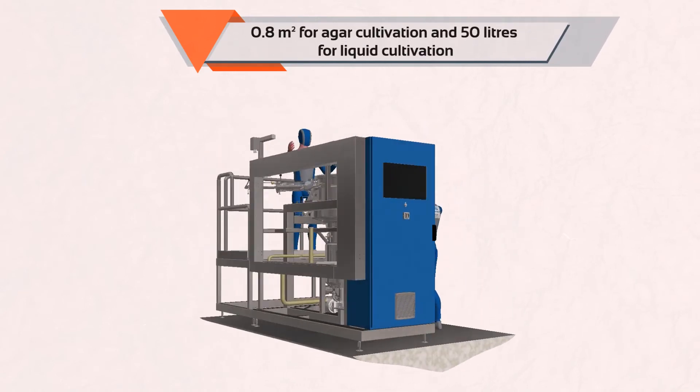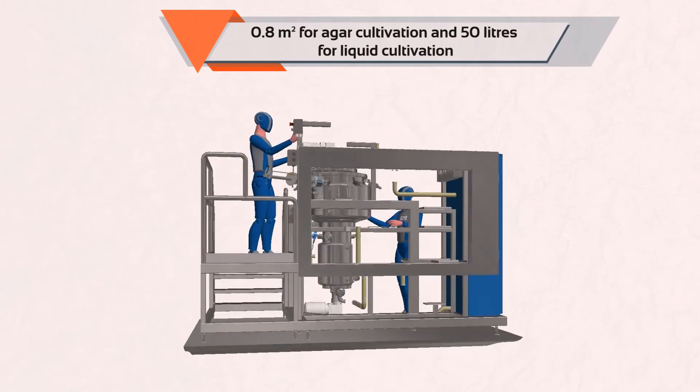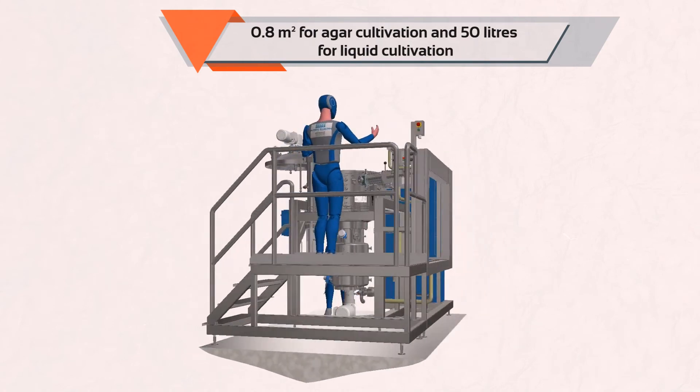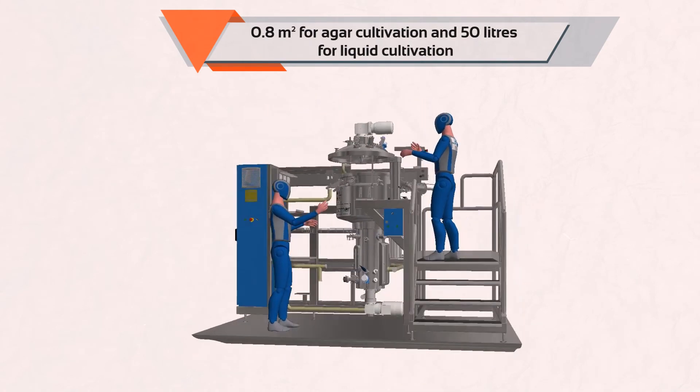Unifertex offers 0.8 square meters for agar cultivation and 50 liters for liquid cultivation and can be scaled up according to the needs of the client.